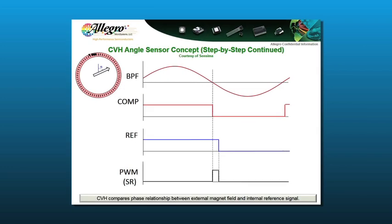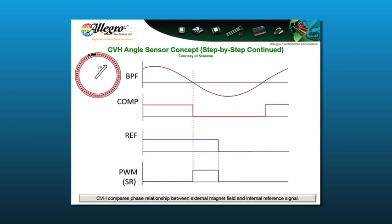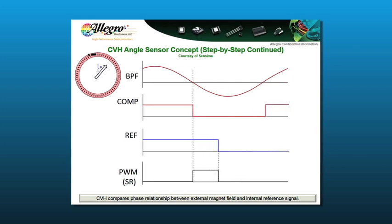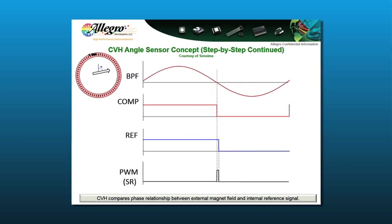In this animation, we see the resultant sine wave that was created by stepping around the ring, which is bandpass filtered and then rectified into a square wave. In this particular case, the falling edge of the comp signal, representative of the zero crossing of the bandpass filter, is compared to the falling edge of the ref signal, generated internally by the angle sensor IC.